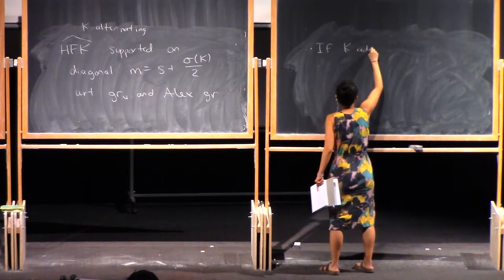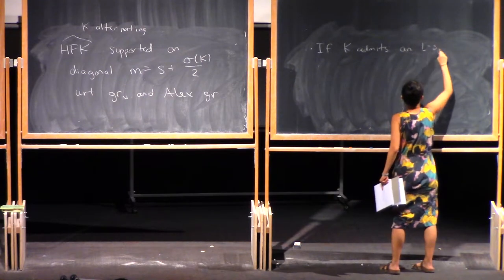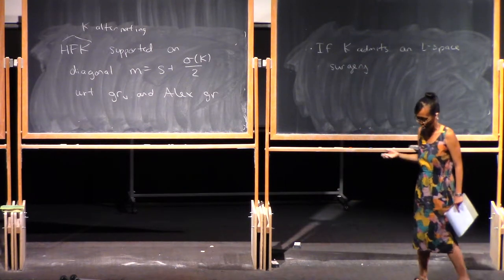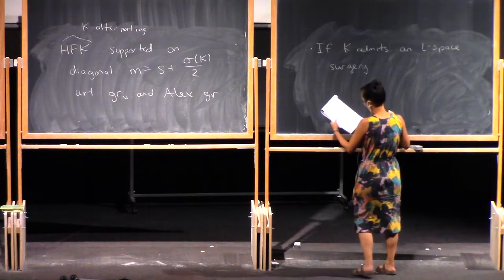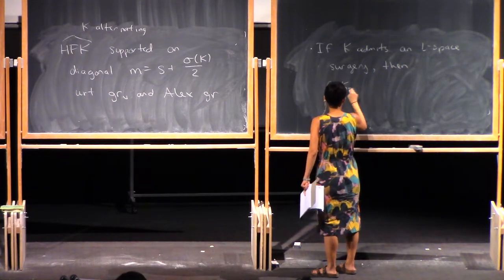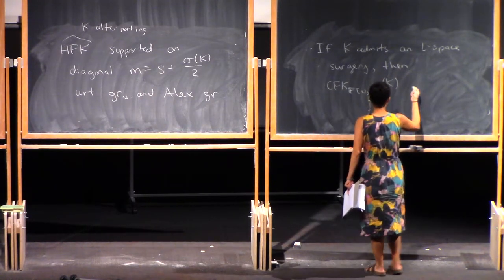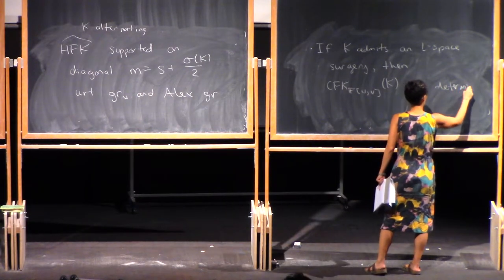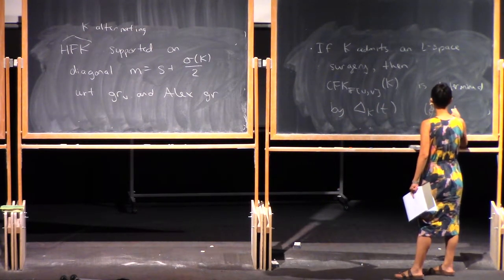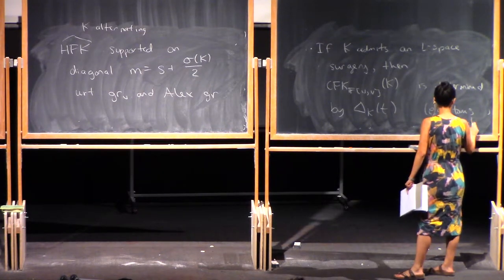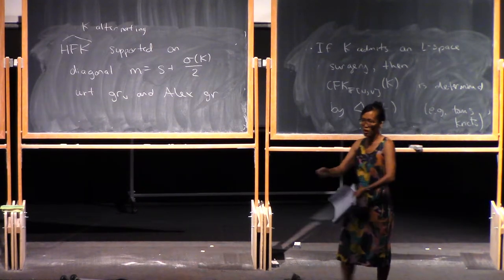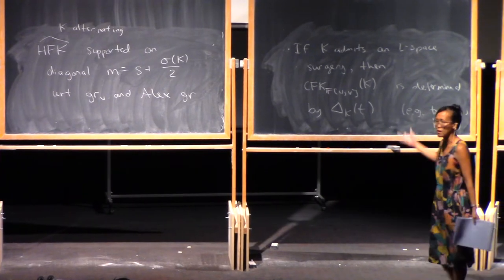There's another family for which the same statement is true: if K admits a surgery to an L-space — a Heegaard Floer homology lens space, meaning a rational homology sphere with the same Heegaard Floer homology as a lens space — then the knot flow complex is entirely determined by the Alexander polynomial. For example, all torus knots admit lens space surgeries, so for all torus knots you can compute the knot flow complex from the Alexander polynomial. Combined with the Künneth formula, this gives you a large family of interesting knot flow complexes.